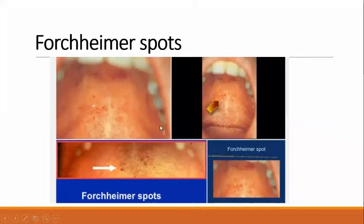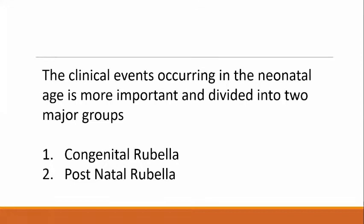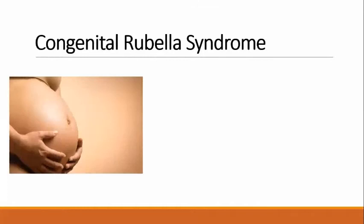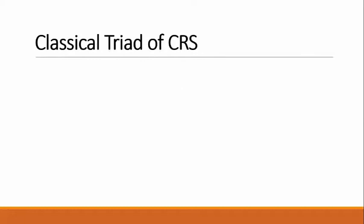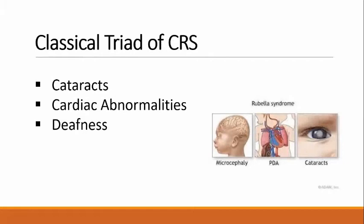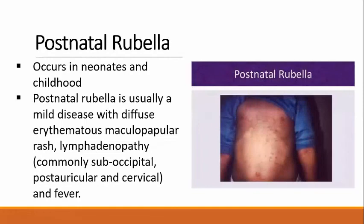Clinical events in the neonatal age are divided into two major groups: congenital rubella and postnatal rubella. Congenital rubella syndrome occurs during the first trimester of pregnancy and can affect fetal development, potentially leading to fetal death or premature delivery. The classical triad includes cataracts, cardiac abnormalities, and deafness. Postnatal rubella occurs in neonates and childhood and is usually a mild disease with diffuse erythematous maculopapular rash, lymphadenopathy, and fever.